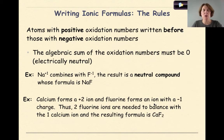How do you write ionic formulas? Well, general rules. Atoms with positive oxidation numbers will be written before those with negative oxidation numbers. Typically, this is going to translate into your metal being written first and your nonmetal being written second. Now remember, the algebraic sum of the oxidation numbers must be equal to zero. In other words, electrically neutral. And we just talked about this when we assigned oxidation numbers in the last video. So for an example, a sodium ion combines with a fluoride ion. And the result is a neutral compound whose formula is NaF. Because the plus one and the minus one cancel each other out. Or calcium forms a positive two ion. And fluorine forms an ion with a negative one charge. Therefore, you need two fluorine ions to balance out the one calcium ion. And the resulting formula is CaF2.